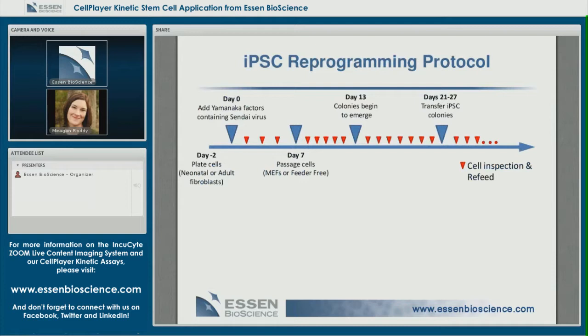This slide presents an overview of the reprogramming workflow used to exemplify rare event imaging. I used Life Technologies' CytoTune reagent to reprogram two different cell lines in a roughly four-week experiment. The cells were seeded two days ahead of CytoTune addition, requiring that time to reach 80–90% confluence — the point at which the reagent could be added. I used the confluence metric in Zoom to help monitor this process.